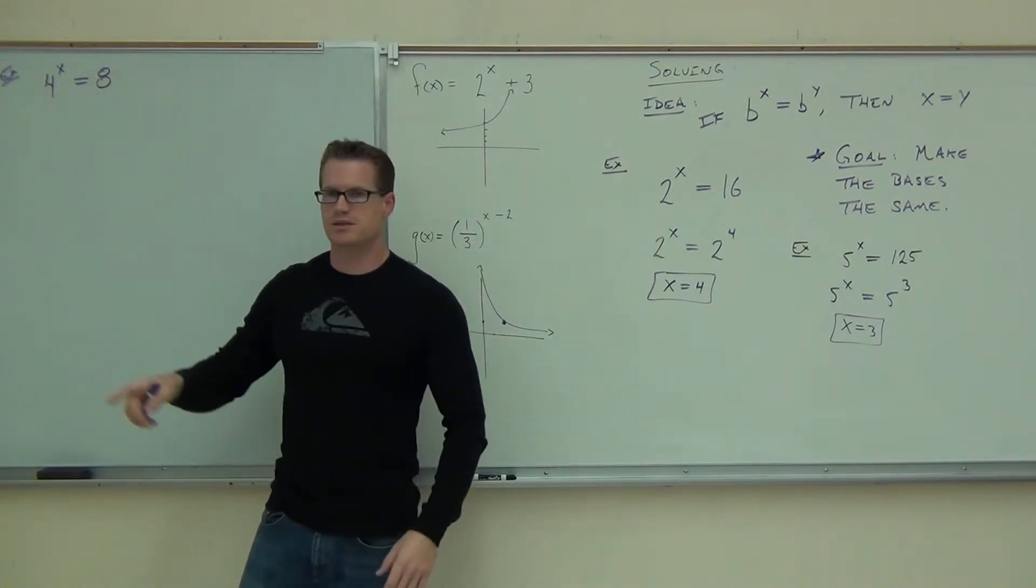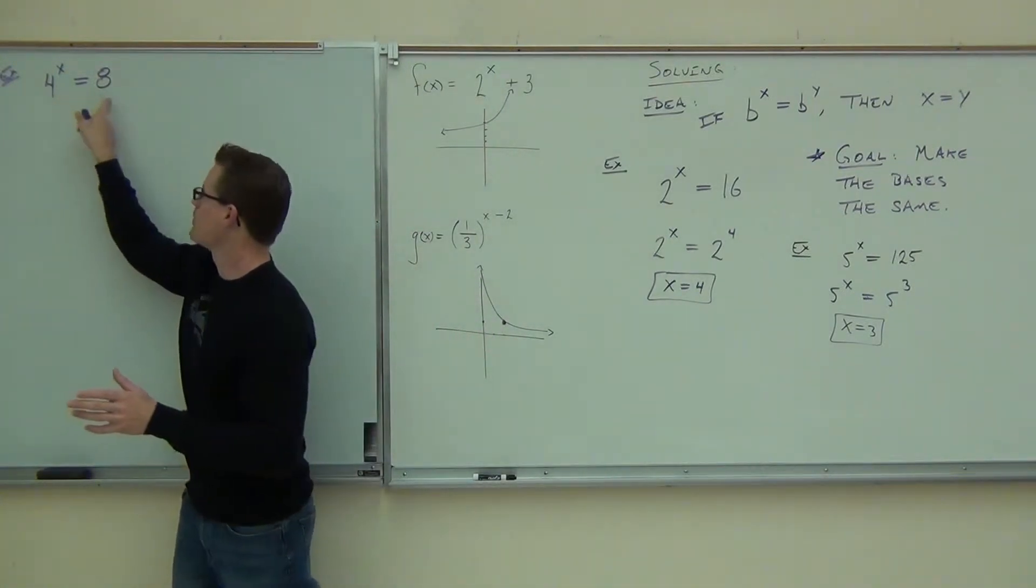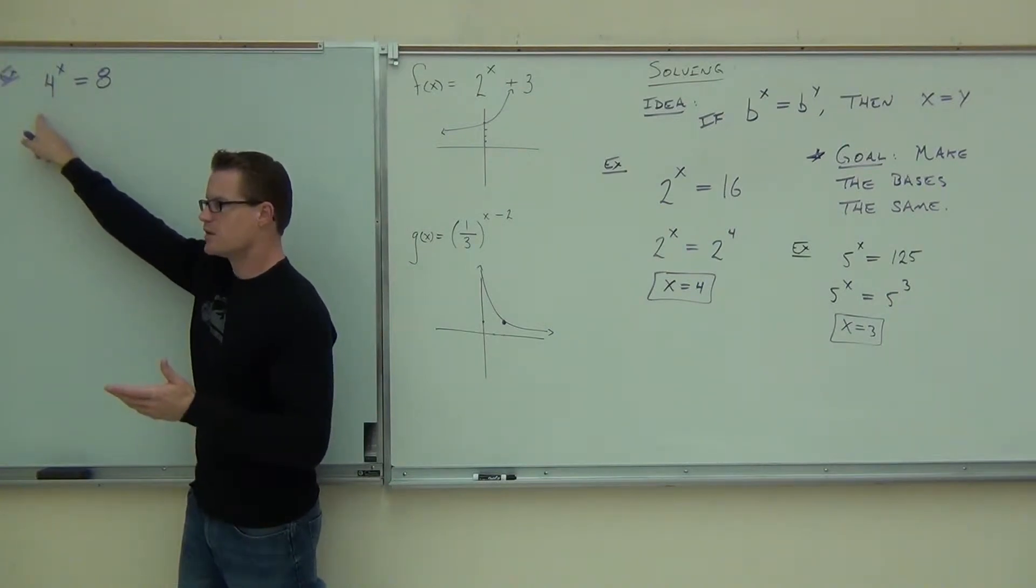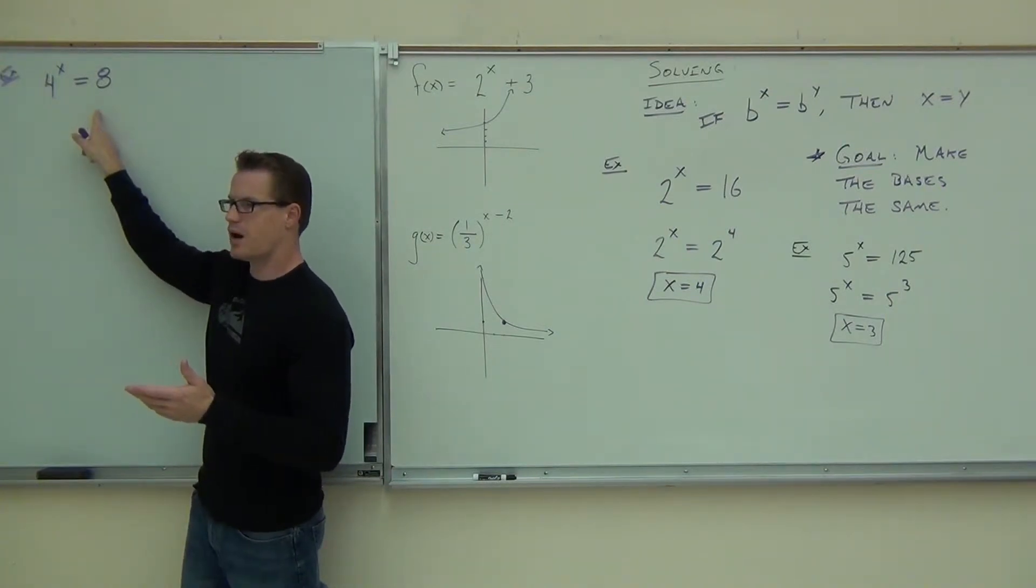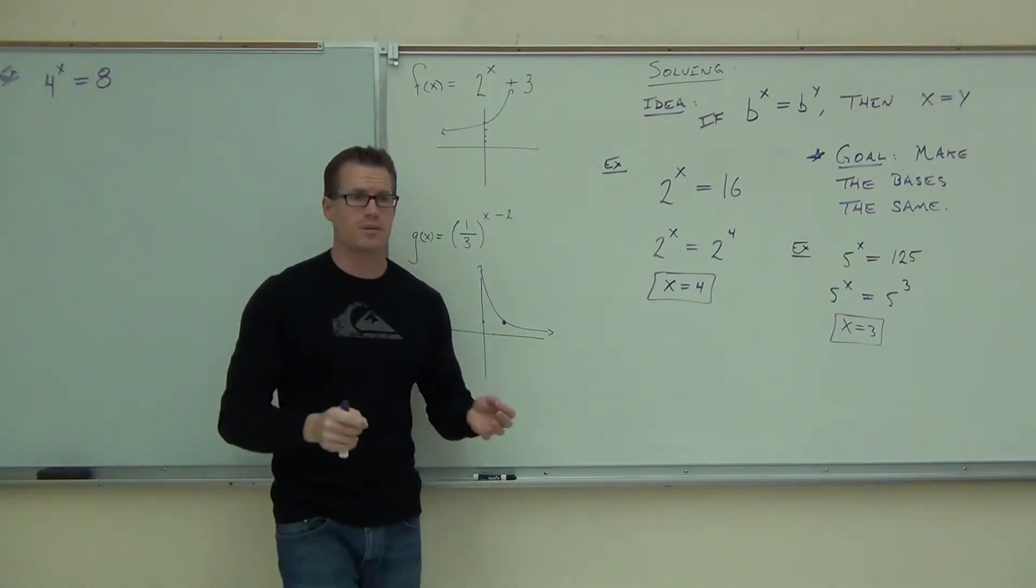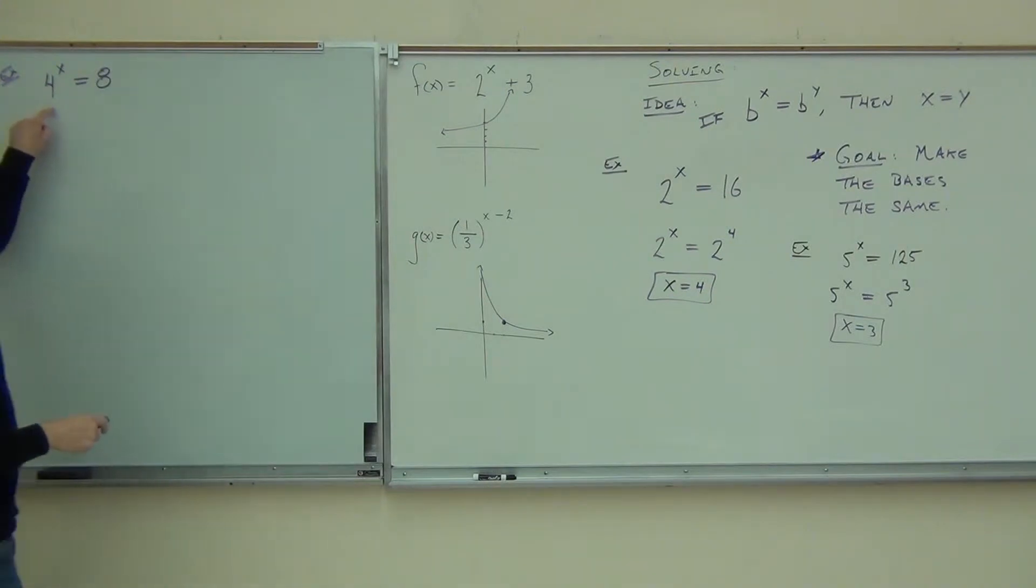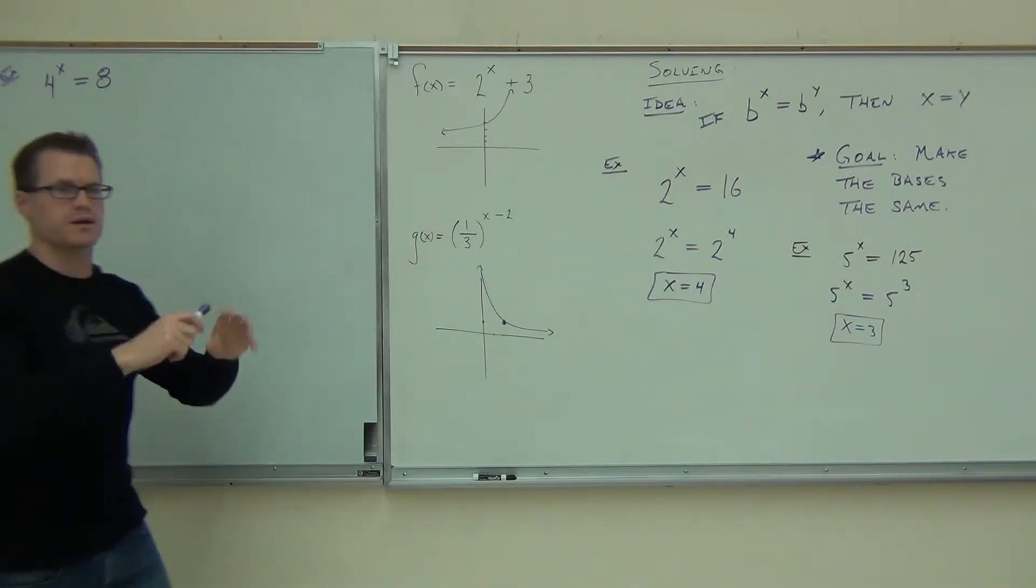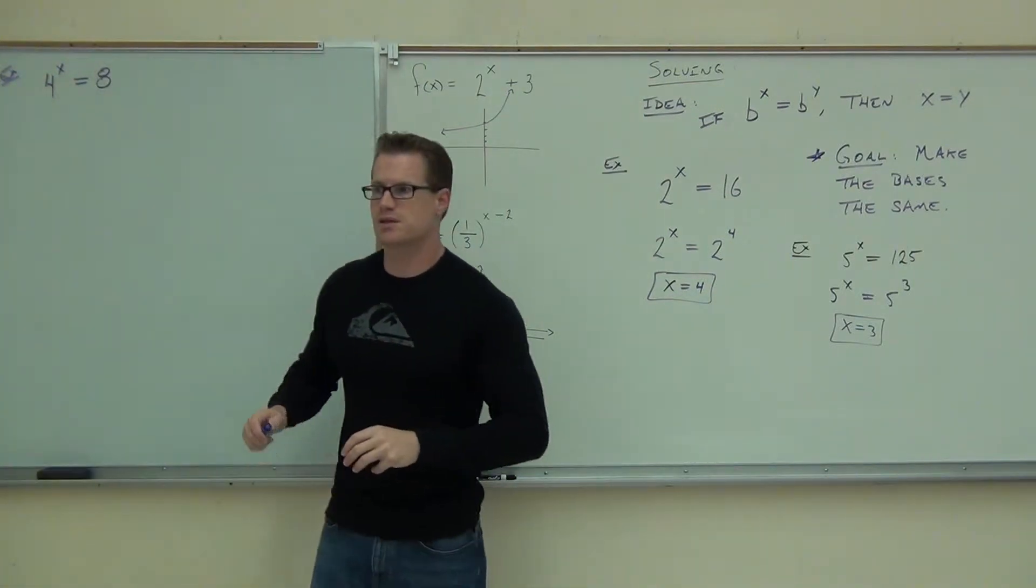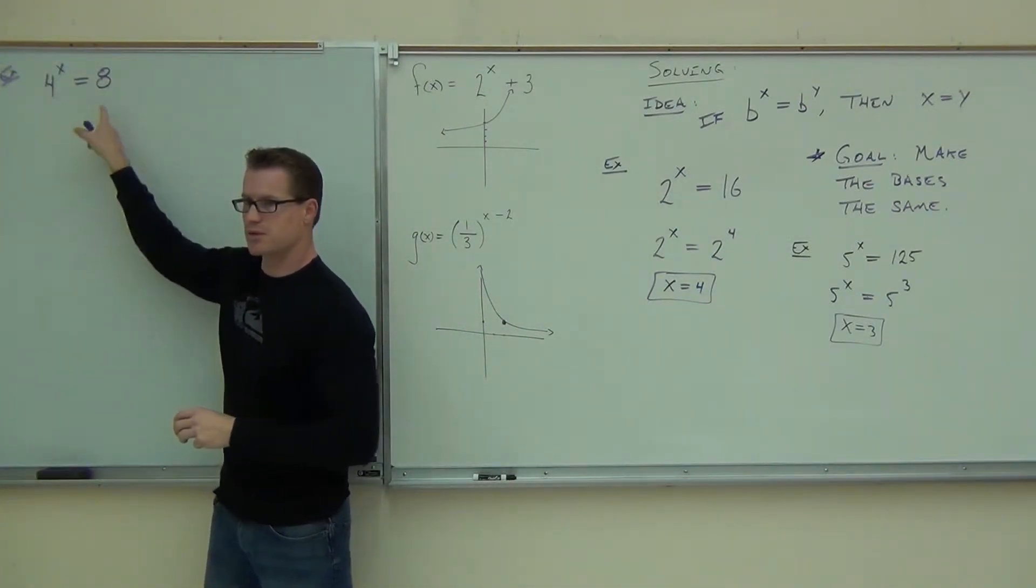Here, we've got to change both bases. So occasionally you'll come across a problem where it doesn't look like you can make common bases out of it. Well, this one, you can't write this as 4 to any power. However, do they both have a base that you could write it in common? Yeah. How could you write this one?